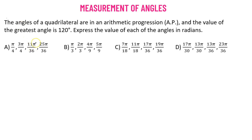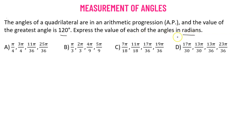In this problem we are provided with the angles of a quadrilateral. It is mentioned that these angles are in arithmetic progression, and it is also given that the greatest angle measures 120 degrees. We have to find each of the angles and also represent each of them in terms of radians. So let us begin.